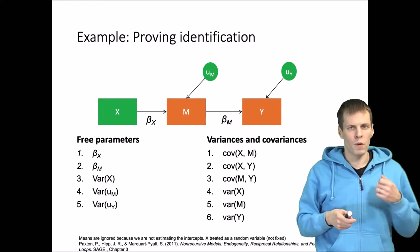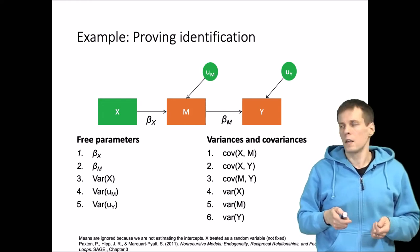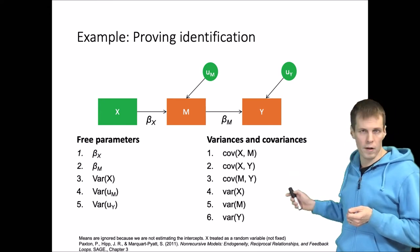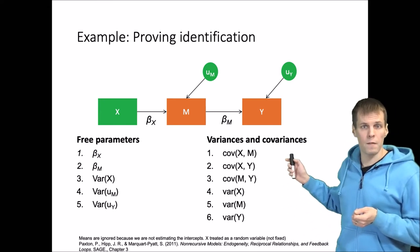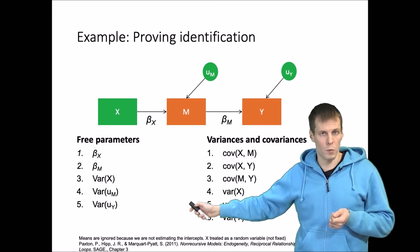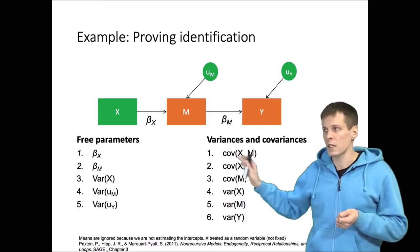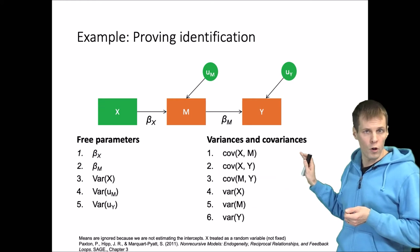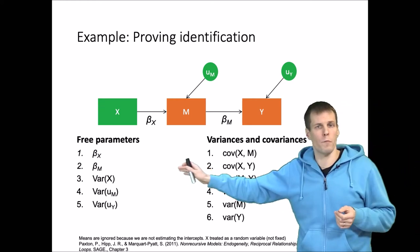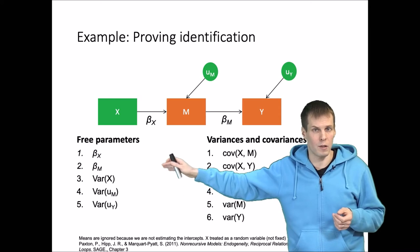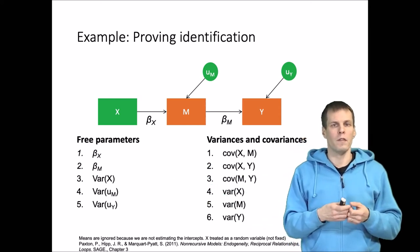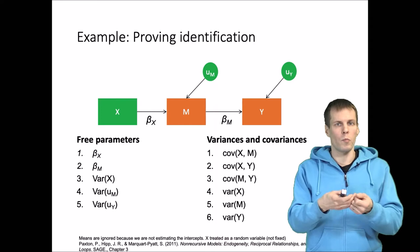How we proceed with proving that this is identified is that we first express these variances and covariances in the sample as functions of the model parameters that we are estimating. This is the information that we know from the sample and this is the information that we need to estimate, so we need to understand if the estimation problem is even in principle possible to solve.